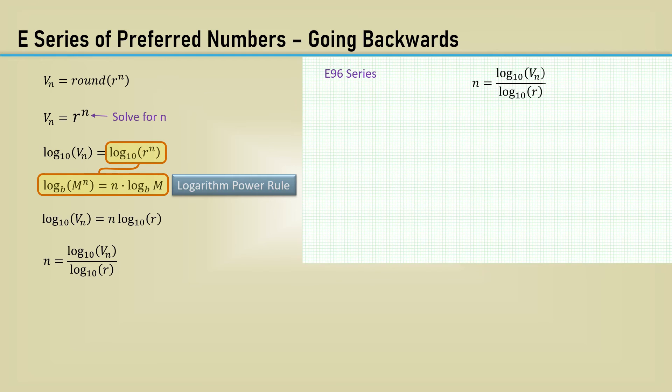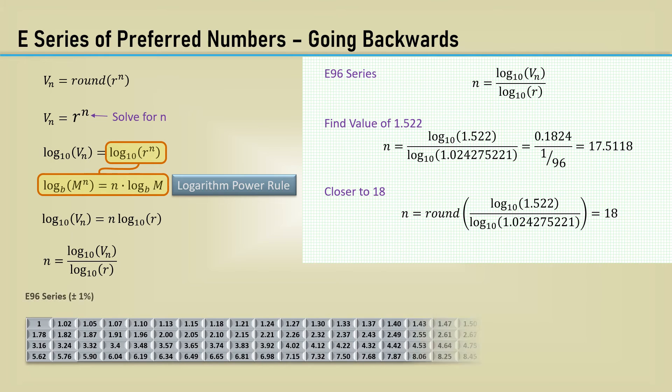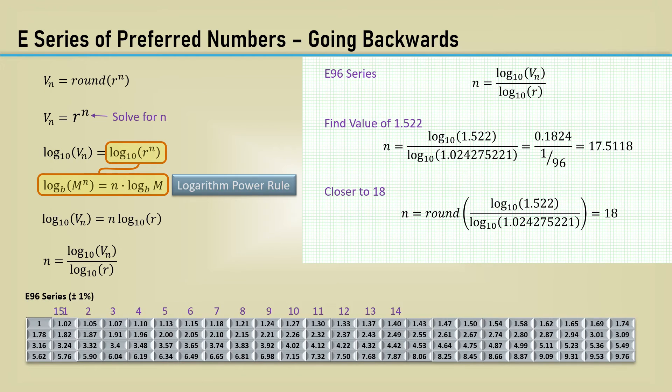Let's determine the closest series value to 1.522, which comes out to 17.5118. We need the integer n, and 17.5118 is closer to 18, so a simple round function does the trick. Here in the chart, the 18th value is 1.54, but there is another layer of complexity here. The series chart only covers one decade. Our desired value is not often going to be between 1 and 10, like the chart.